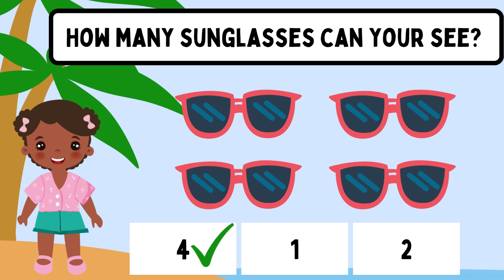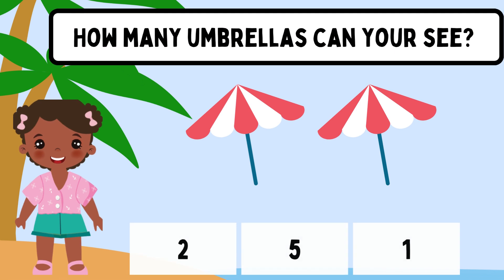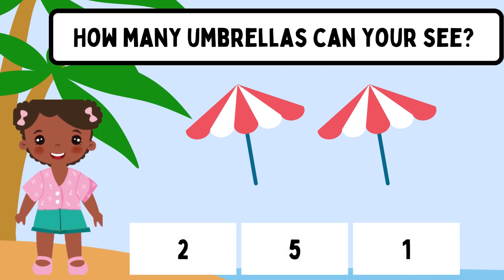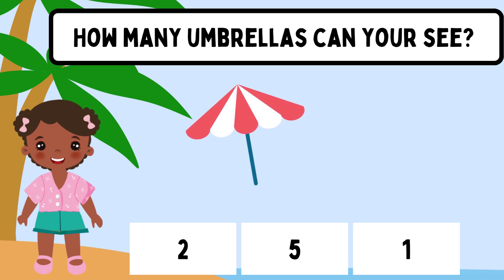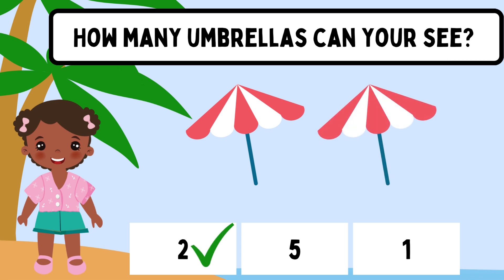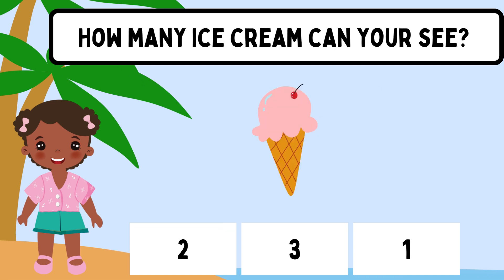How many umbrellas can you see? Two umbrellas, five umbrellas, or one umbrella? Let's count them. One, two. There are two umbrellas in the picture. How many ice creams can you see?